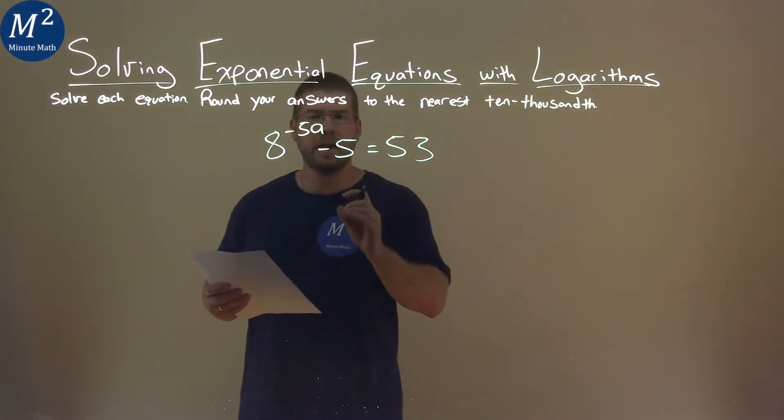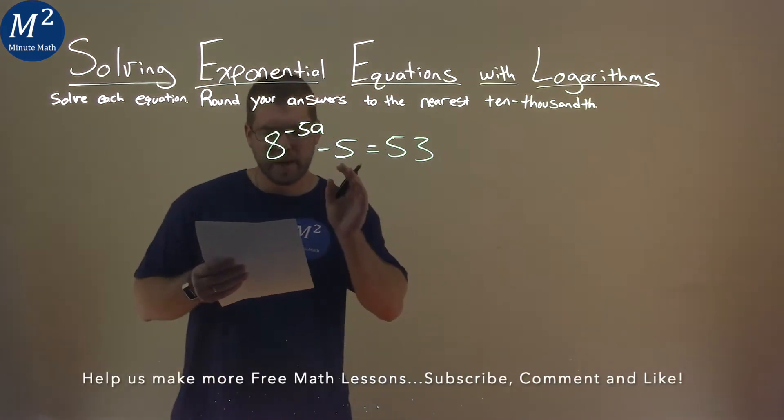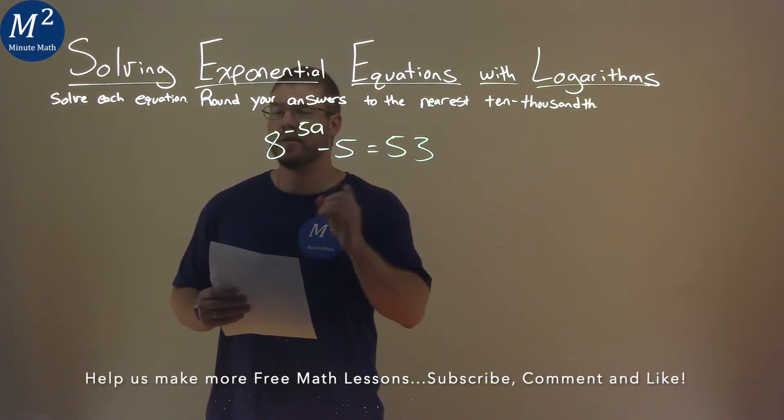We're given this problem right here: 8 to the negative 5a power minus 5 is equal to 53, and we need to solve this equation.